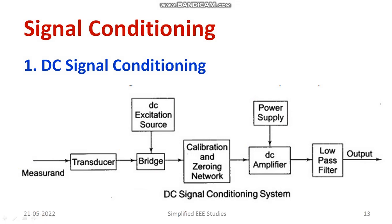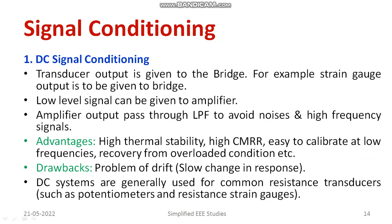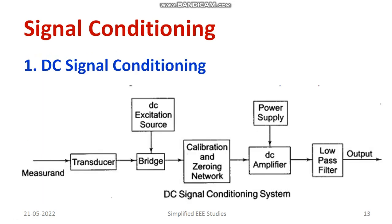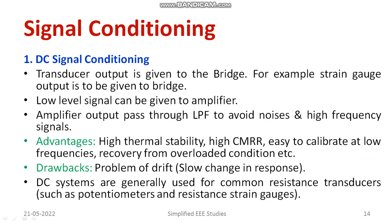The transducer output — for example, a strain gauge output, which is in the form of resistance — is given to the bridge. The low-level signal is then given to the amplifier, and the amplifier output passes through a low-pass filter to avoid high-frequency signals and noise. These are the basic structures of DC signal conditioning devices. However, there are drawbacks such as drift — a slow change in response — so we need improvement, which is where AC signal conditioning devices come in.